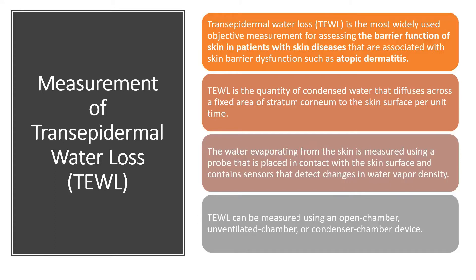The skin acts as a protective barrier — it not only prevents external substances from penetrating inside the body, but also prevents body fluids from evaporating to the outside. Corneocytes under the skin prevent the loss of fluids from the skin to the outer surface and also prevent external entry. The skin maintains a sort of balance that allows it to have its proper functioning.